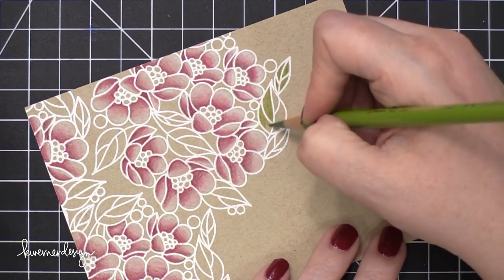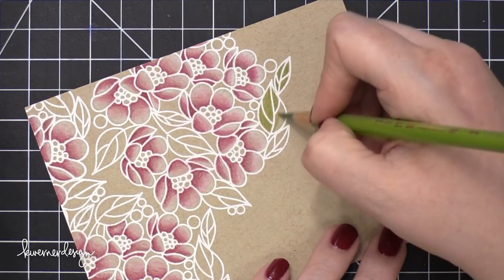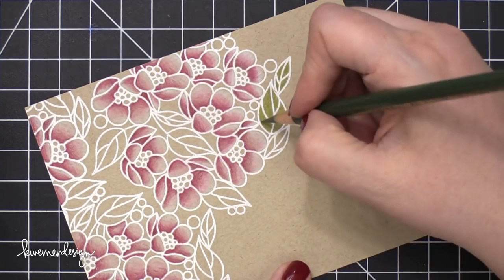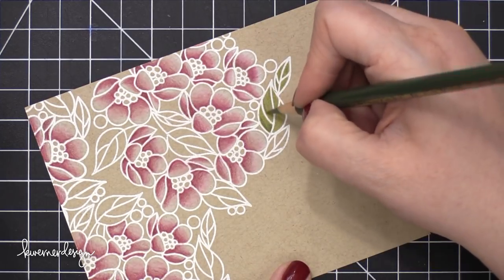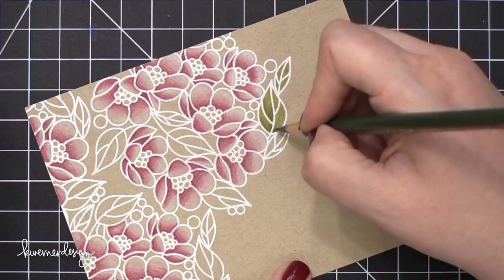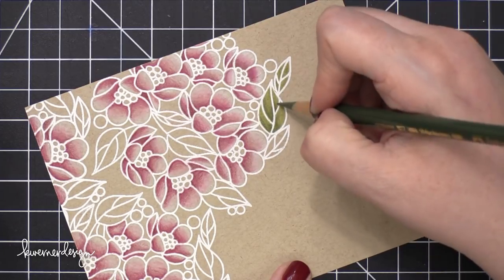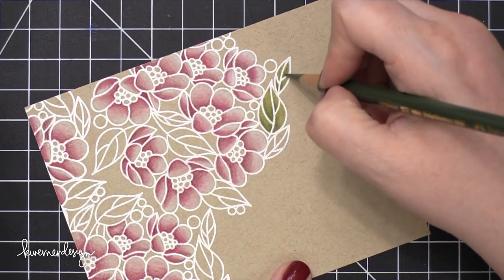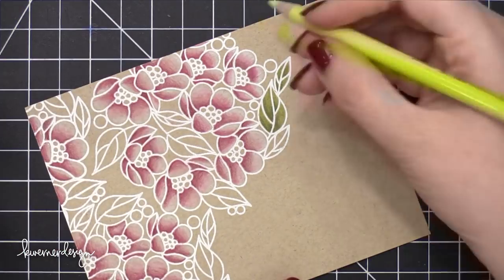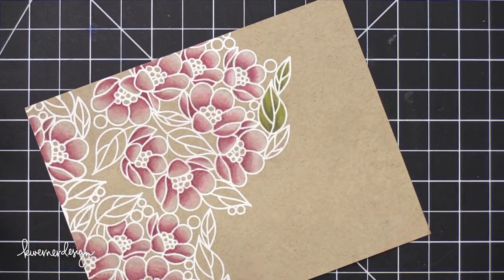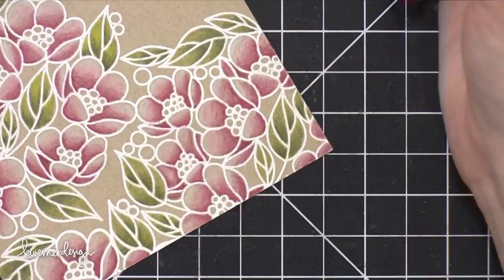As far as the leaves go, I started with kind of a medium green shade. I then added some darker areas in the corners of the leaf. And then I came in with a very bright yellow green shade. And I just added that to the highlighted areas just to add a little bit of interest and make that leaf glow.